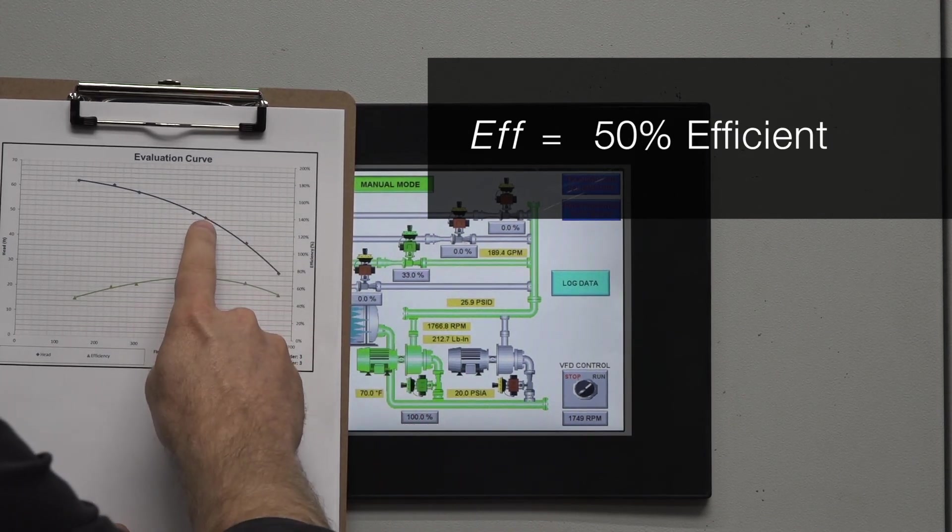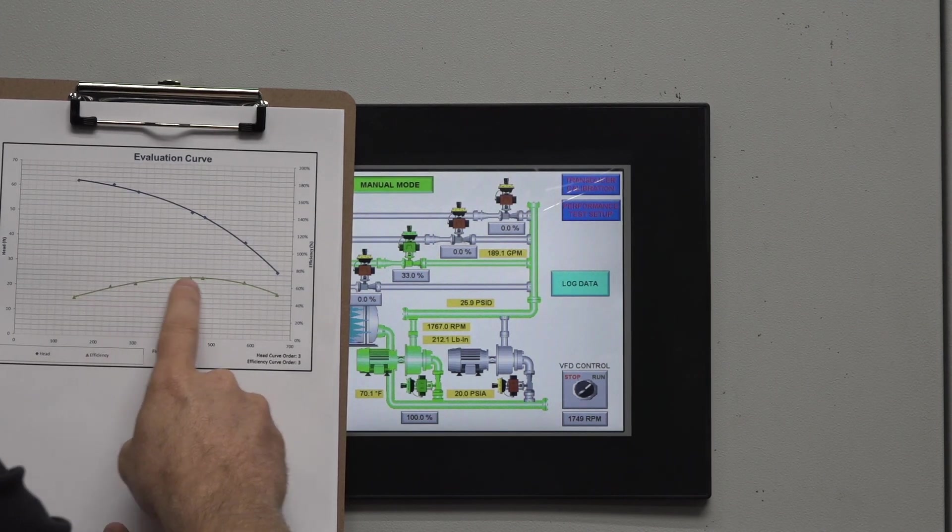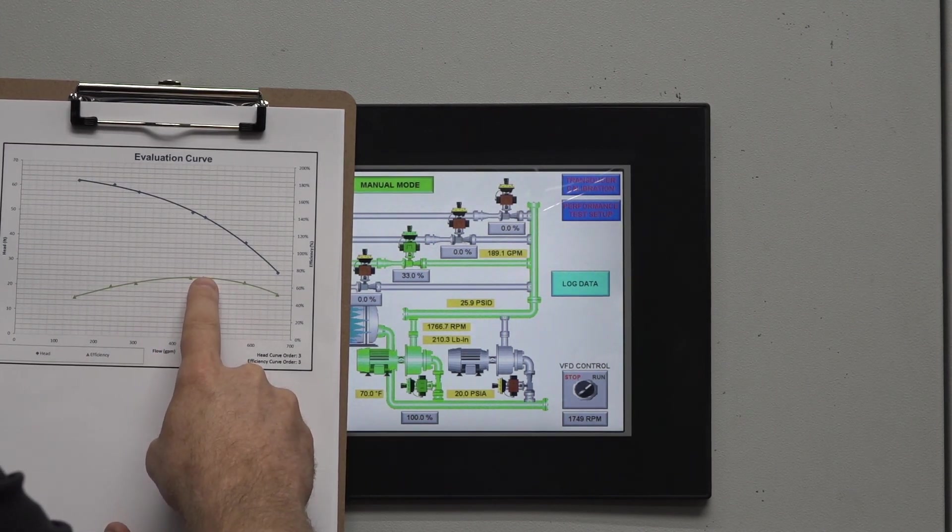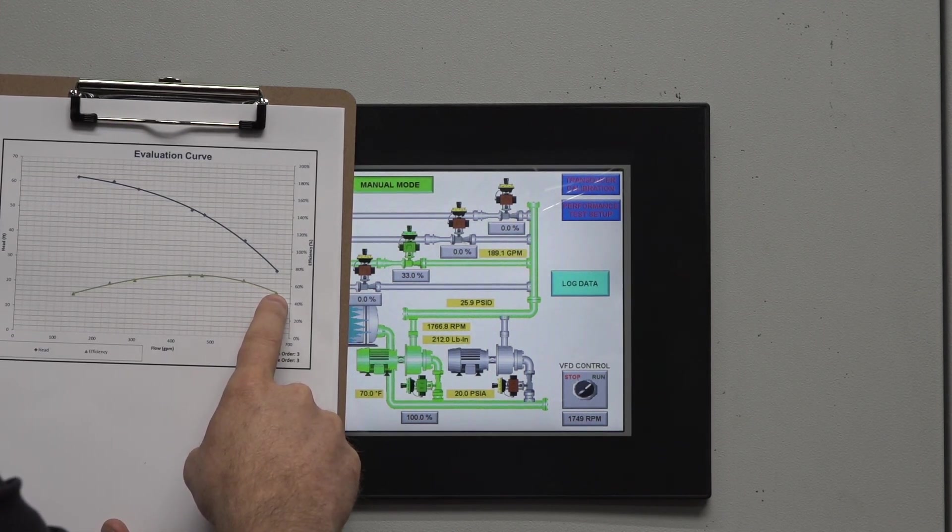What you're going to see is we had low efficiency at the left of the curve, high efficiency at our BEP, and again lower efficiency as we move to the right of the curve.